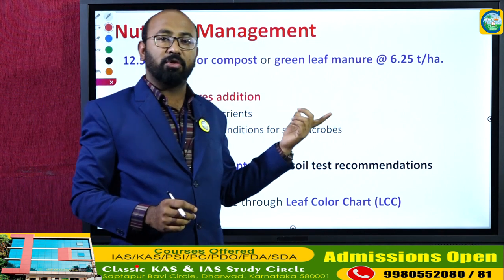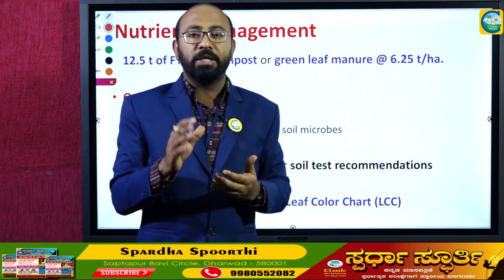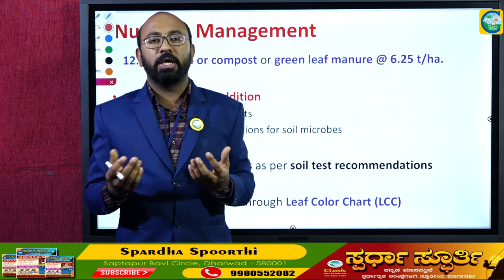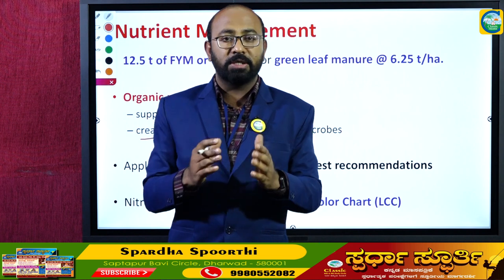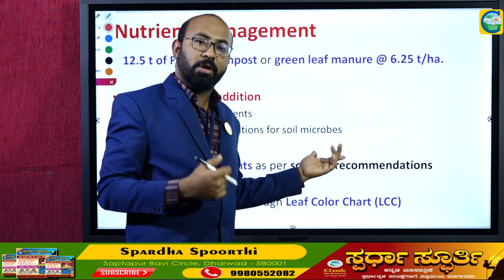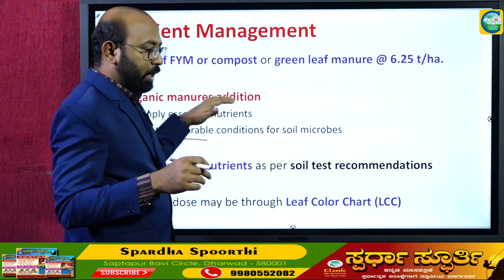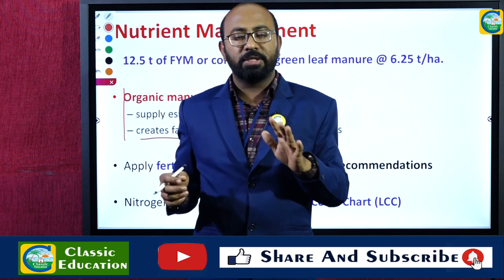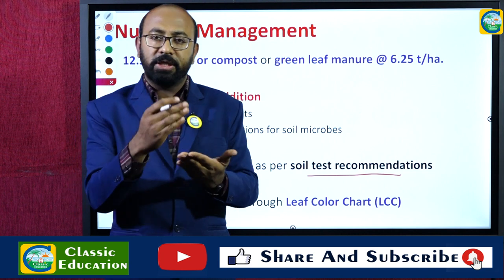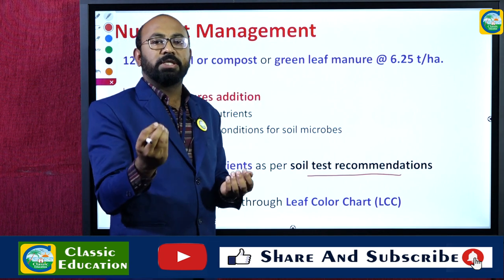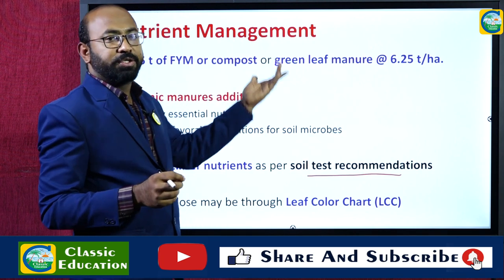Organic manures are favored in SRI because they supply essential nutrients — nitrogen, phosphorus, potassium — and micronutrients like calcium, magnesium, and sulfur. These organic manures create favorable conditions for soil microbes. Soil is a living resource harboring microorganisms that are helpful in mobilizing nutrients and fixing nitrogen. Microbial activity is enhanced by organic manures because they provide the required carbon for microorganisms. If organic manures are insufficient, synthetic fertilizers can be applied based on soil test recommendations.